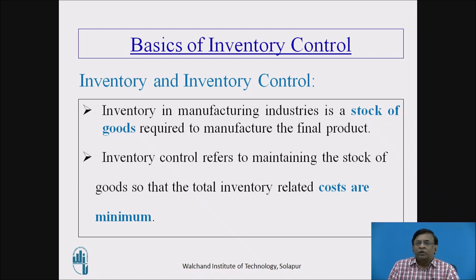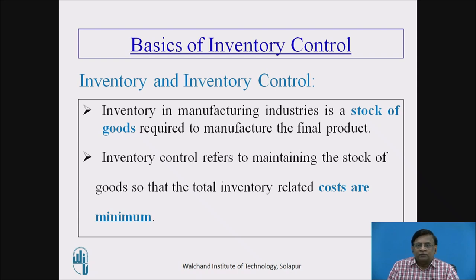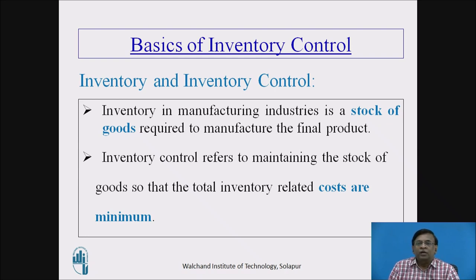Coming to what is inventory, we focus our discussions mostly on the engineering manufacturing industry. To run any manufacturing industry, we need a variety of items. All these items — the stock of goods which we need to manufacture the final product of any manufacturing company — that stock of goods is called inventory. We are considering only the items which go into manufacturing the final product of a company.